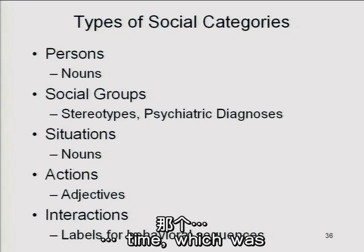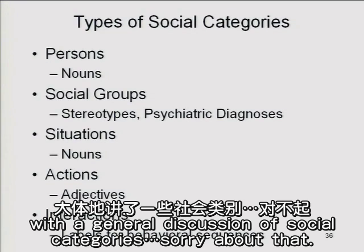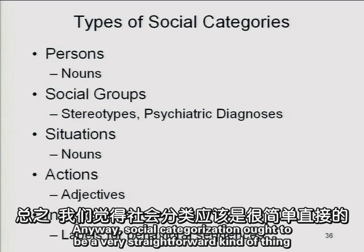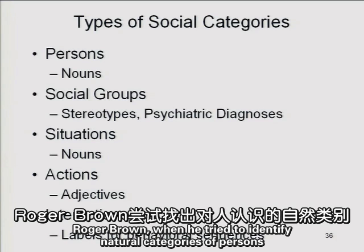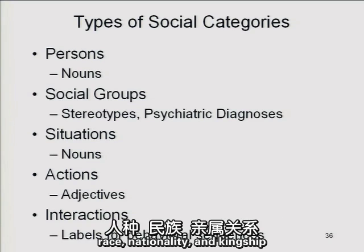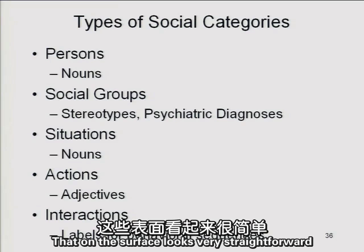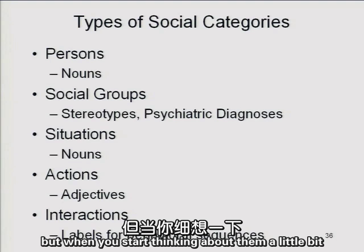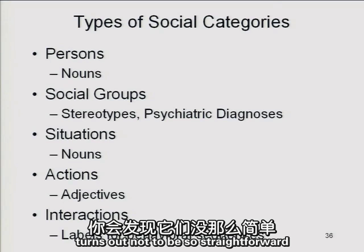Last time, we had a general discussion of social categories. Social categorization ought to be a fairly straightforward kind of thing. Roger Brown, when he tried to identify natural categories of persons, came up with fairly straightforward concepts like sex, race, nationality, and kinship — that on the surface look very straightforward, but when you start thinking about them a little bit, it turns out not to be so straightforward.